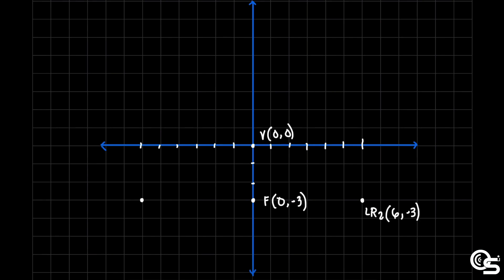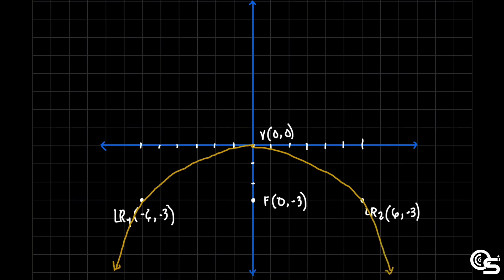With the use of these points, we can now sketch our parabola from the vertex. From the vertex going to LR₁, this is how it behaves. Then from the vertex going to LR₂. That would be our parabola. Next, let us plot the directrix at y equals 3 — that is on top of the vertex, 3 units upward. This is where our directrix lands, represented as a broken line.